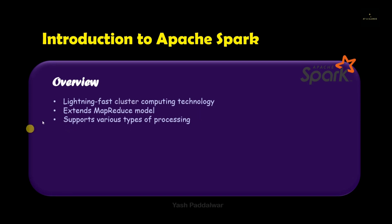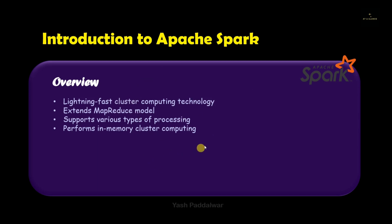What makes it different from the normal Hadoop system is that Apache Spark supports various types of processing — not only the batch processing covered inside the Hadoop system, but also real-time stream processing as well as graph processing, and that too at a very fast pace. Apache Spark is faster because it performs in-memory cluster computing, meaning data is stored inside RAM instead of slow disk drives and is processed in a parallel manner, making querying and processing extremely fast.